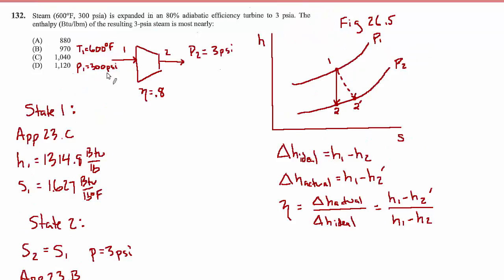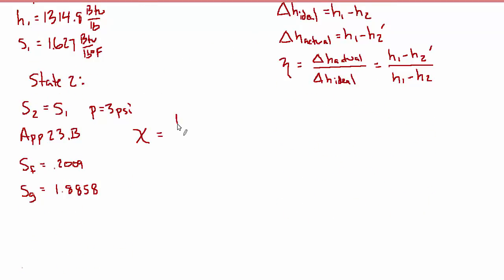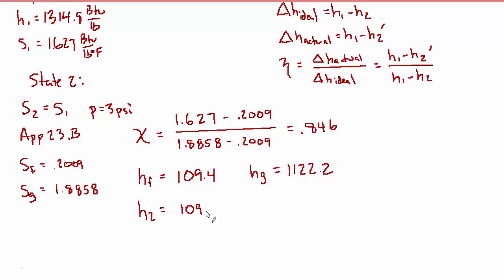We can find the quality of the mixture. The steam came in as superheated steam, now it's gone through the turbine and it's a saturated mixture with some quality between zero and one. The quality is 1.627 minus 0.2009 divided by 1.8858 minus 0.2009, which equals 0.846. It's still more steam than liquid water. Now we can find h2 using that quality. From the same line in appendix 23B, hf is 109.4 and hg is 1122.2. So h2 is 109.4 plus the quality times the difference between 1122.2 and 109.4, which equals 966.2 BTU per pound.